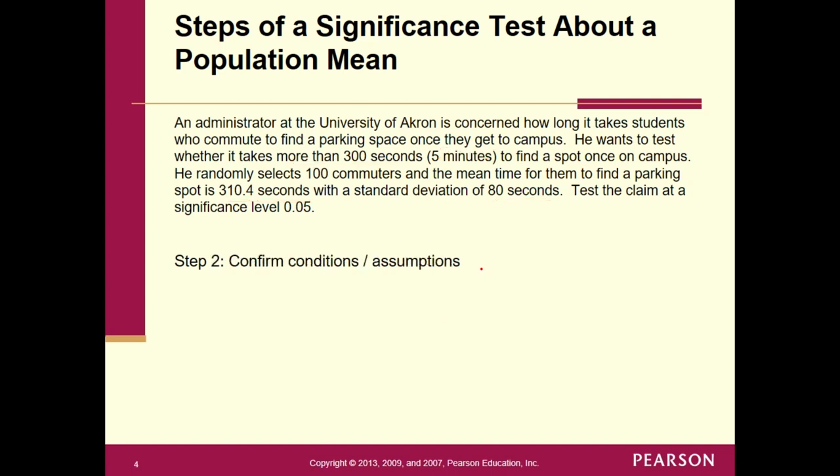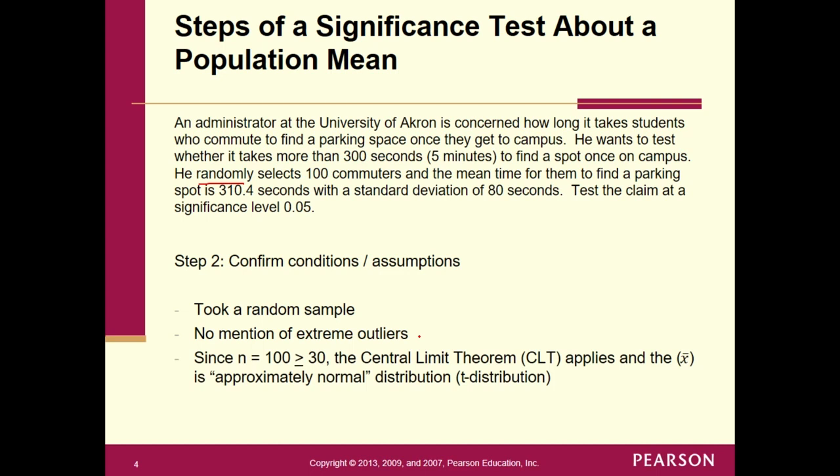All right. Hopefully that all makes sense. What's the second step? Verify our conditions, right? And if we have any assumptions. And so first condition, we took a random sample right here. Random selects, right? Two, there is no mention of any outliers. That's more of an assumption here. In practice, we would take a look at a histogram and see if we have any extreme outliers. And in these problems right here, you would expect not to hear anything about outliers because we wouldn't know how to handle it if we did. And then the next one would be that since n is equal to 100, that's greater than or equal to 30. What's applying? The CLT, the central limit theorem. And that means the sampling distribution of x-bar is approximately normal. It takes on a t-distribution.